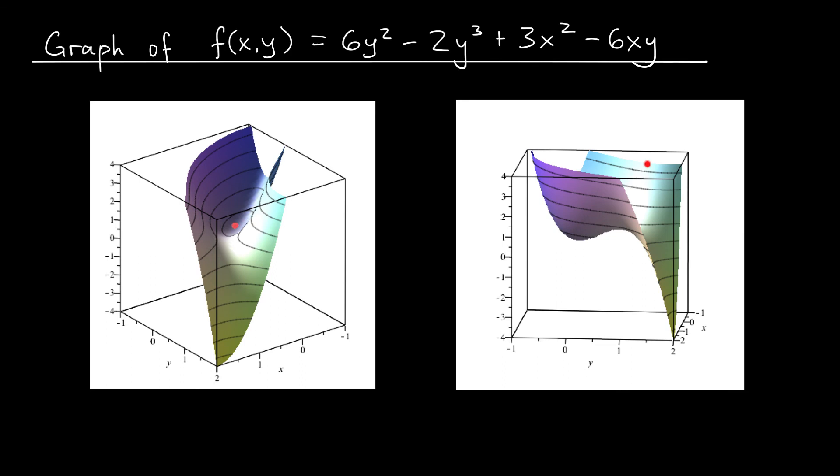That might be even clearer in the second picture. (0,0), local minimum. On the other hand, at (1,1), we would be at this point right here. You can see that in this direction, we have a maximum, right? We're coming up out of the bowl and down the side of the function. But in this direction, we have a minimum. The same can be seen in the second picture. A minimum in this direction, a maximum in this direction. We've got ourselves a saddle point. The end.